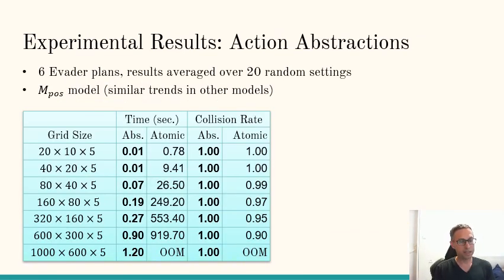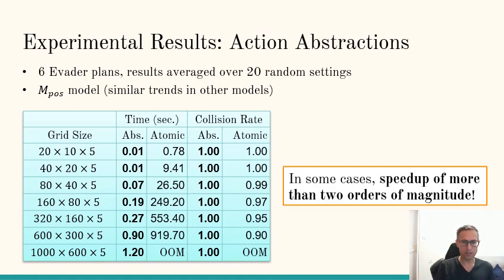What you can see here is the comparison between using just the atomic actions and using our abstract actions that I explained before. These results are in the abs column and the atomic are the baseline just using atomic actions. And what you can see here is that using the abstract actions pays off significantly. It results in much faster solving and much better collision rate. The better collision rate is because in the other case, we sometimes reach a timeout. So clearly, using action abstractions here is better.